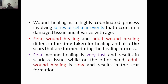Wound healing is a highly coordinated process involving a series of cellular events that occur in damaged tissue, and it varies with age. For example, when we are kids we fall a lot during play and injuries happen, but after a week we are good to go. There may be a scar if the injury was serious, but when we are young, these cells are more active so they heal faster. As we get older — 40, 50, 60, 70 — age plays a very important role.